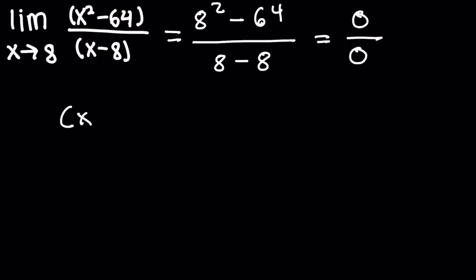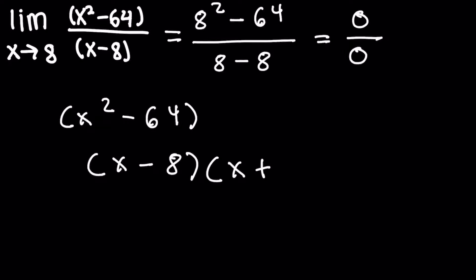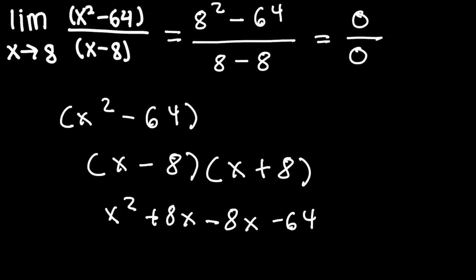We're going to have to factor x squared minus 64. This is a difference of squares, so we take the square root of x squared, which is x, and the square root of 64, which is 8, giving us x minus 8 times x plus 8. We can check: x times x is x squared, 8 times x is 8x, minus 8 times x is minus 8x, and minus 8 times 8 is minus 64. The plus 8x and minus 8x cancel, leaving x squared minus 64.